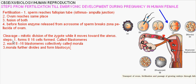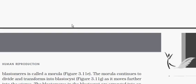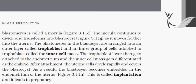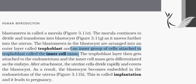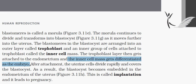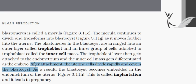The blastomeres in the blastocyst are arranged at the outer layer, called the trophoblast. An inner group of cells attached to the trophoblast is called the inner cell mass, which gets differentiated and forms the embryo. The trophoblast attaches to the endometrium, and uterine cells divide rapidly to cover the blastocyst, which becomes embedded in the endometrium of the uterus. This process is called implantation, and after implantation it leads to pregnancy.